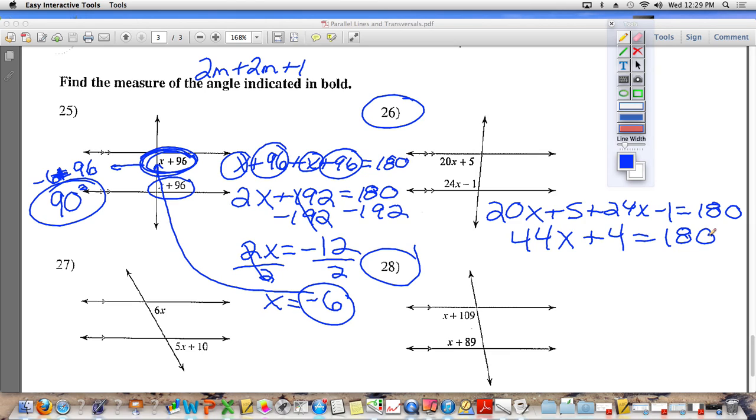What do I do now? I subtract 4. So we have 44x is equal to 180 minus 4, which is 176. We divide both sides by 44. x is equal to 176 divided by 44. Is it 4? Yes, x is equal to 4.